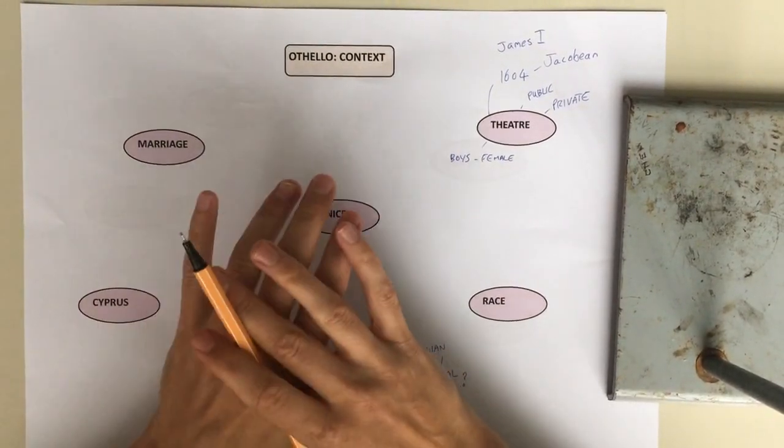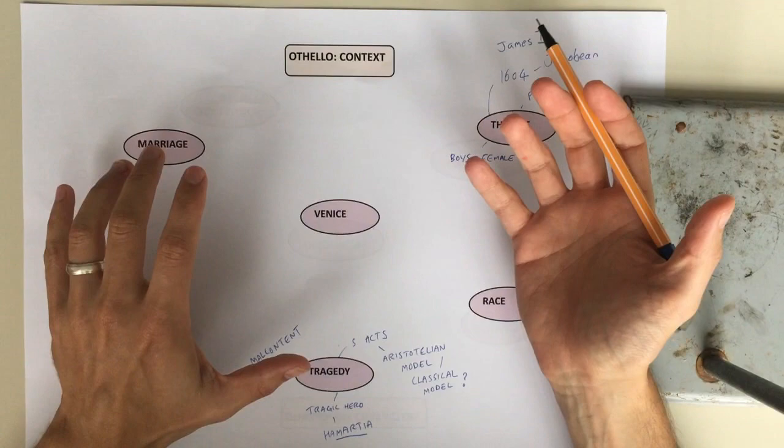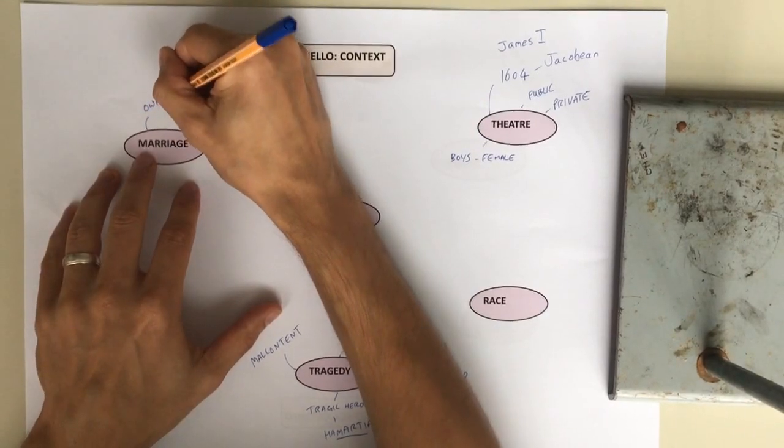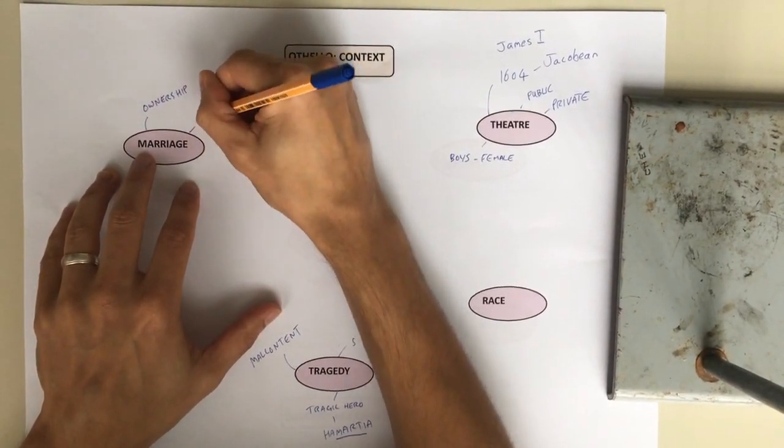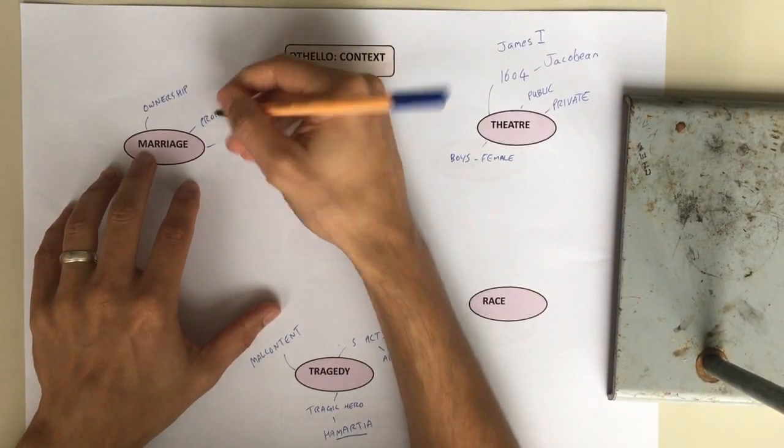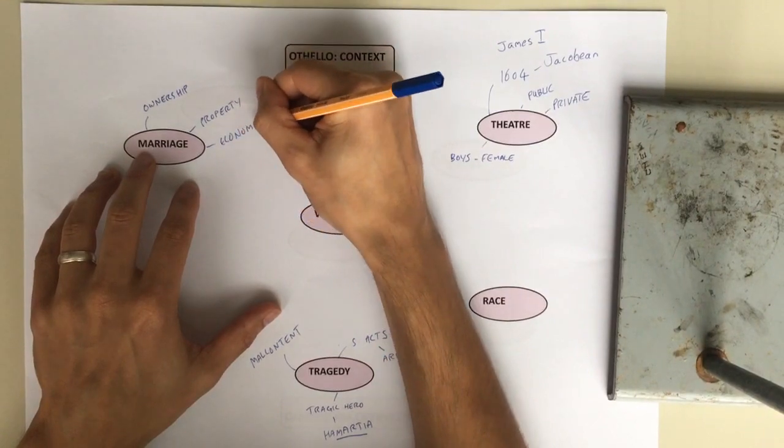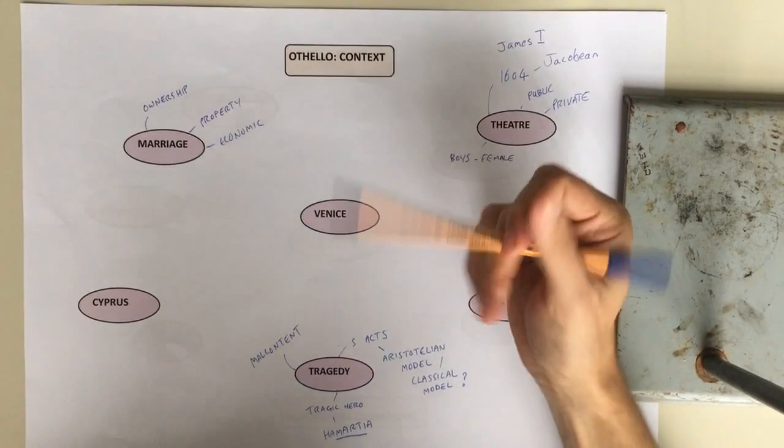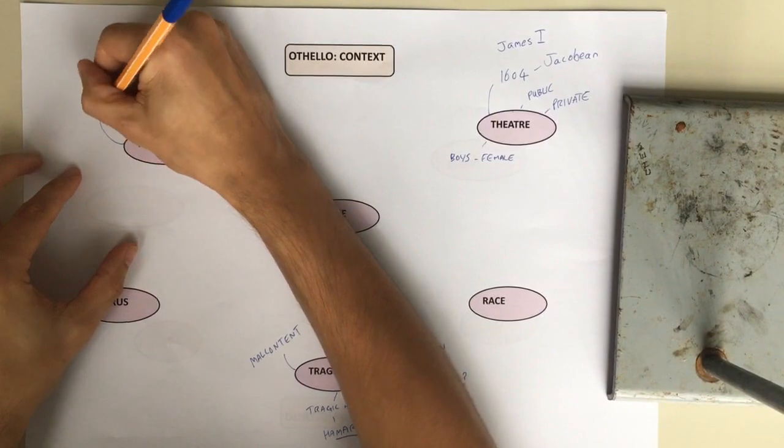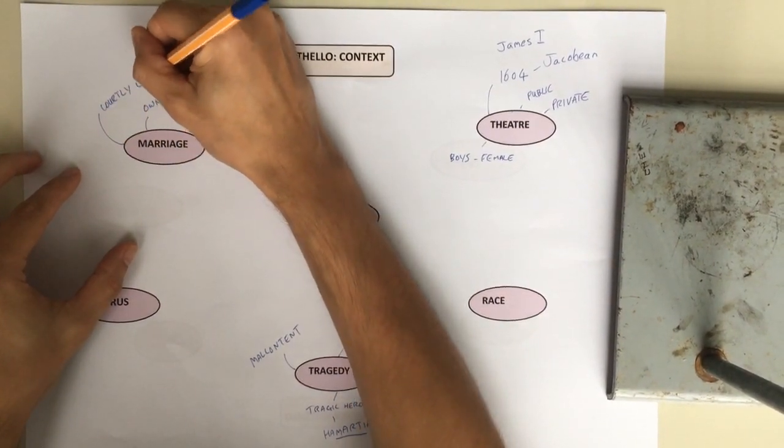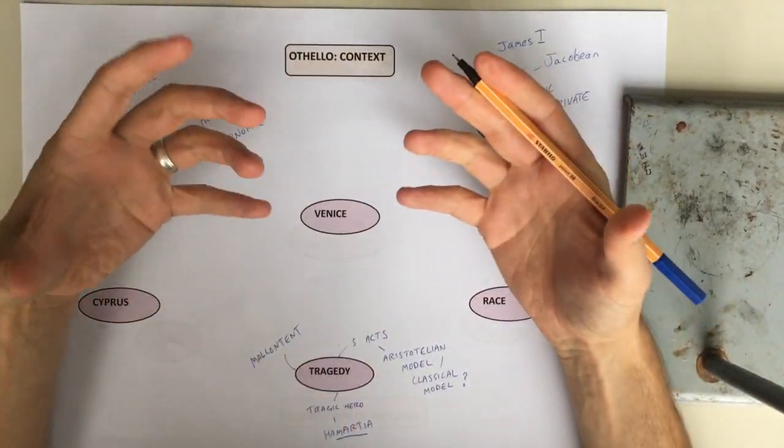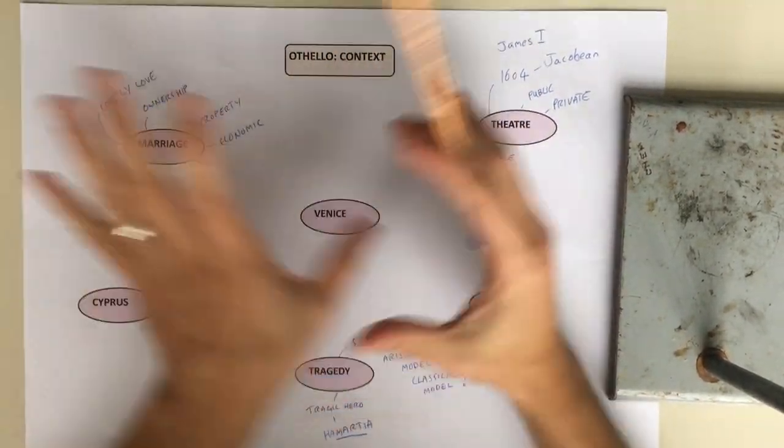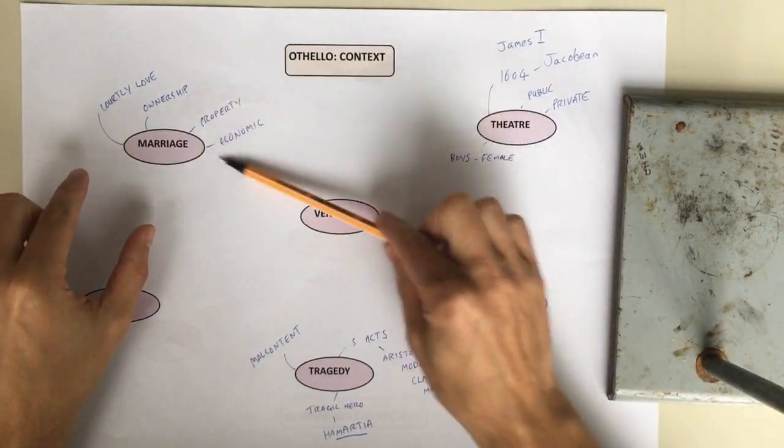A couple of things to do with marriage. Marriage is of course a big issue. The whole play starts with this issue of a marriage, a secret marriage. And it's important to recognize this idea that marriage is essentially about ownership and property and an economic transaction at the time the play is set and the time that it's being performed as well. So the idea of marrying for love or what we call courtly love is relatively new at the time.